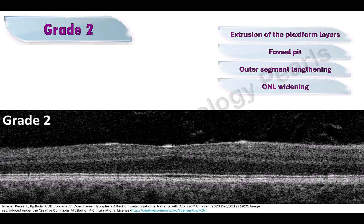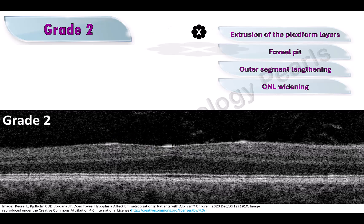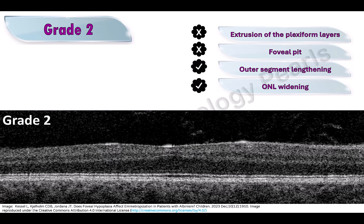In grade 2 foveal hypoplasia, complete extrusion of the plexiform layers is absent. The foveal pit is absent. The outer segment lengthening and outer nuclear layer widening are present as normal.